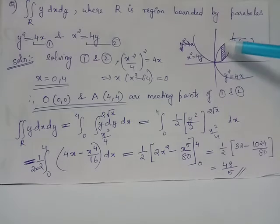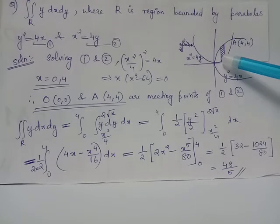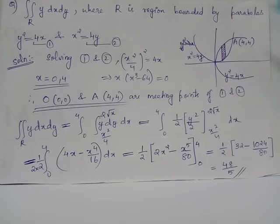Therefore, this vertical strip has range of variation from y equals x squared by 4 to y equals 2 root x.